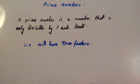In this video we're going to look at prime numbers. A prime number is a number that is only divisible by 1 and itself. Therefore, it will have only two factors.